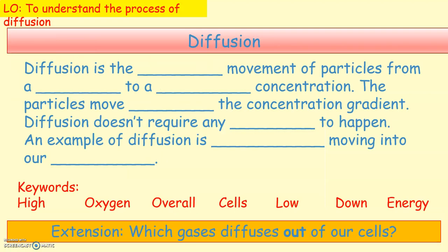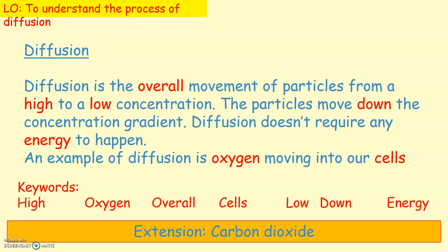Please copy these questions into your books and use the keywords to fill in the gaps. You have three minutes — pause the video now. Diffusion is the overall movement of particles from a high to a low concentration. The particles move down the concentration gradient. Diffusion doesn't require any energy to happen. An example of diffusion is oxygen moving into our cells.